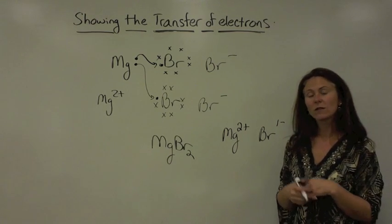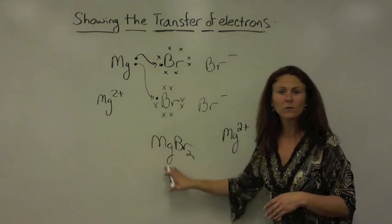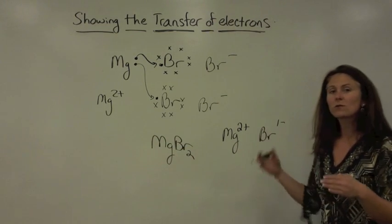So when we look at these charges, an easy way to come up with the chemical formula to know the ratio that these combine is to do something called the criss-cross method.